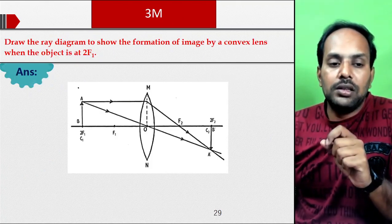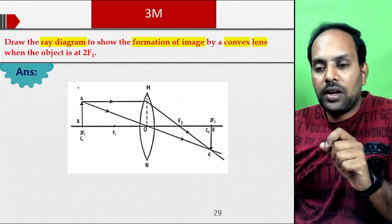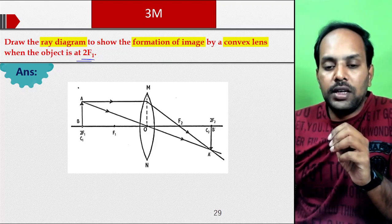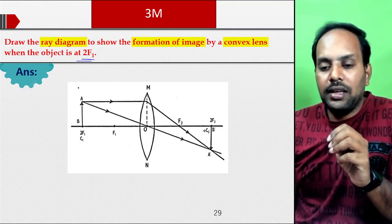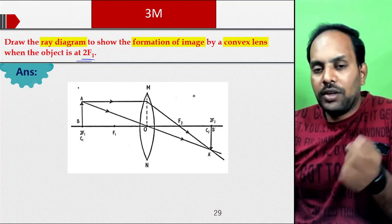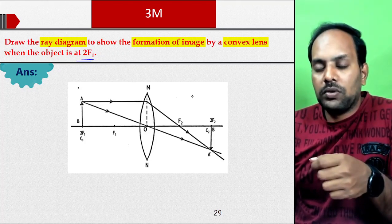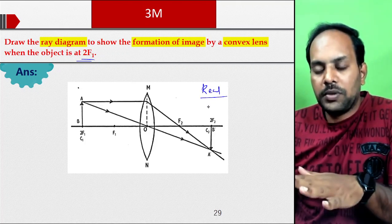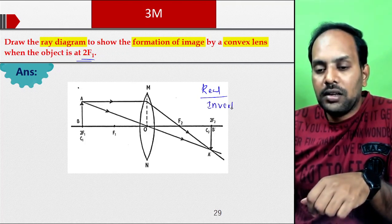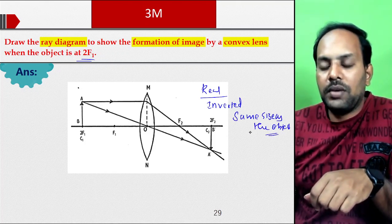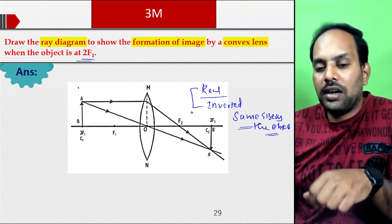Next, a 3-mark question: draw the ray diagram to show the formation of image by a convex lens when the object is at 2F1. After refraction, the image forms at 2F2 on the other side. The image is real and inverted, and the size of the image is the same size as the object.